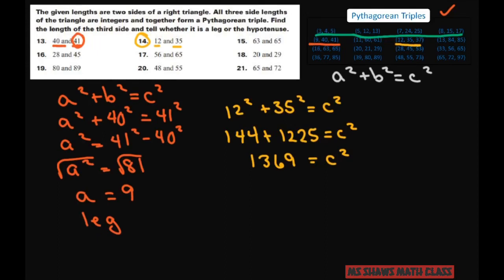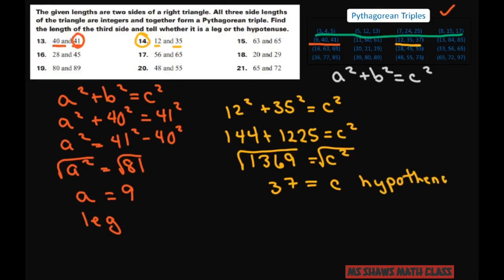Add those together and you get 1,369 = c². If you take the positive square root of both sides, you get c = 37. So that's going to be your hypotenuse because it's the biggest number.